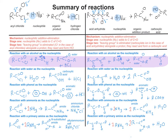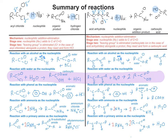Starting with the reaction with alcohols: the alcohol behaves as a nucleophile because the oxygen atom possesses a lone pair. In each case you get an ester and the expected side product. Moving on to the reaction of water as a nucleophile — the lone pairs on the oxygen of water mean it can behave as a nucleophile. In the case of the acyl chloride, you get a carboxylic acid and HCl.